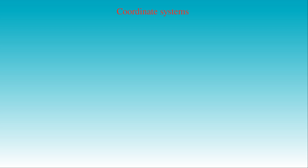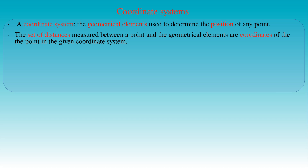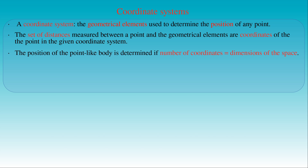Now we are ready to introduce the concept of the coordinate system. The set of geometrical elements used to determine the position of any point in space is called a coordinate system, and the measured distances between the point and these elements are called the coordinates of the point in the given coordinate system. We can have a quantitative description of the position of a body in space if we attach a coordinate system to the frame of reference. The position of the body is uniquely determined if the number of coordinates equals the dimensions of the space in which we use the coordinate system.